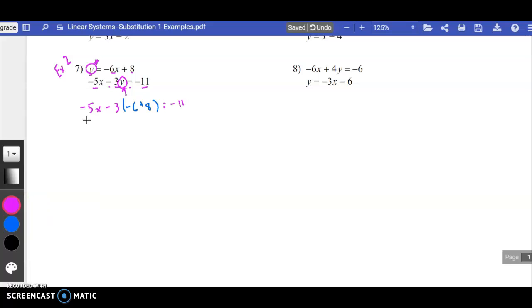So now I can distribute. I have negative 5x. Negative 3 times negative 6 is a positive 18—that should have been an x there. It should be 18x. And then negative 3 times a positive 8 is negative 24, equals negative 11. Combining like terms on the left-hand side: negative 5x plus 18x is a positive 13x minus 24, equals negative 11.